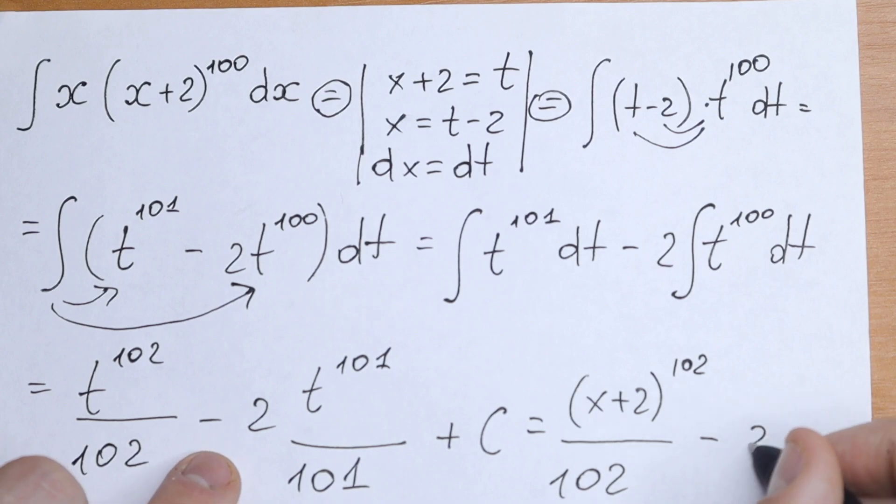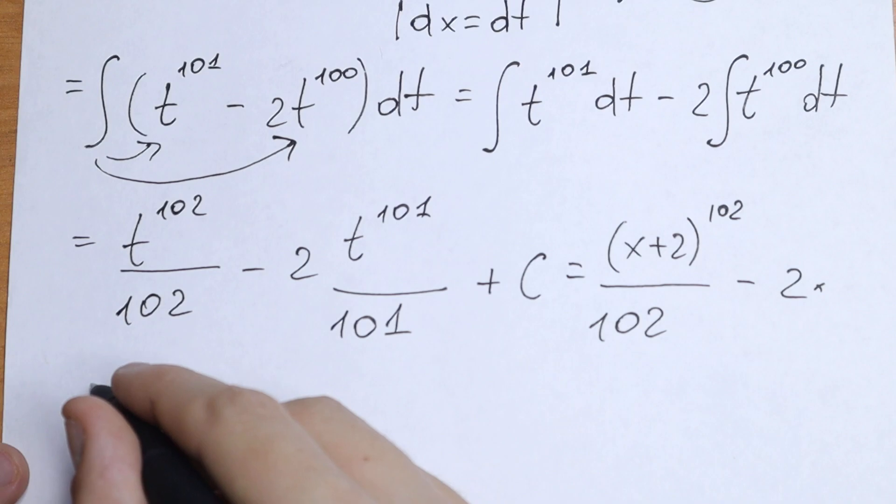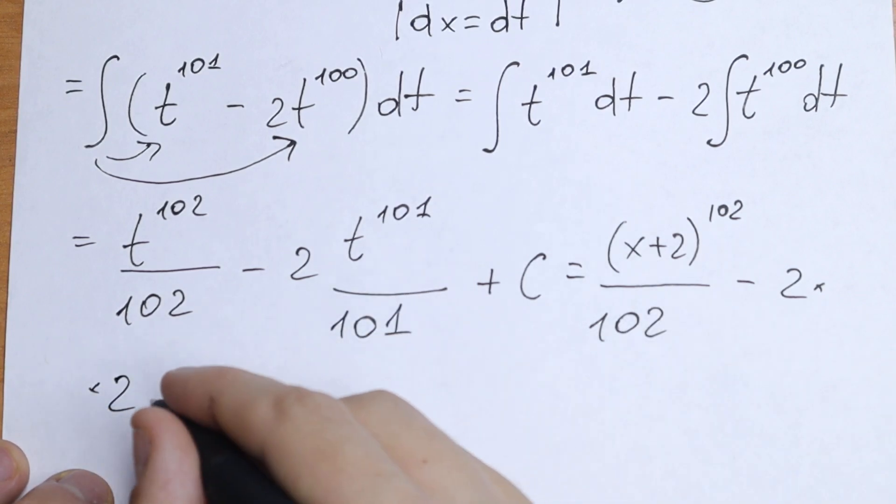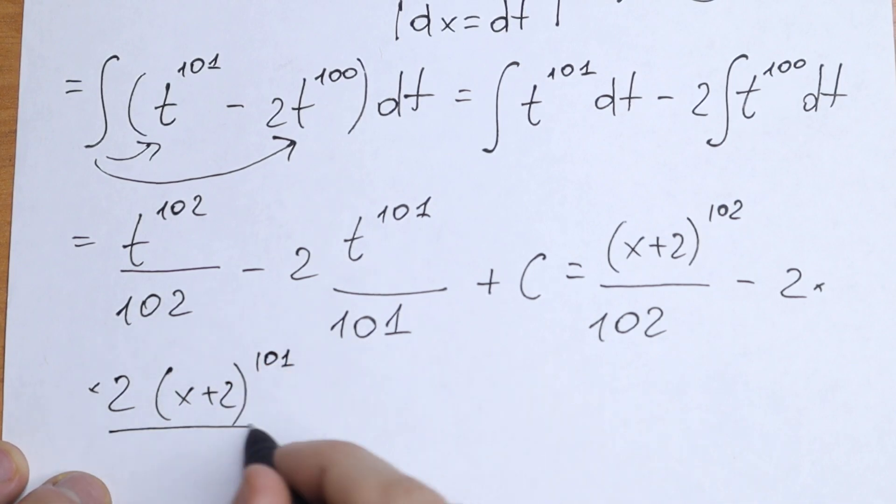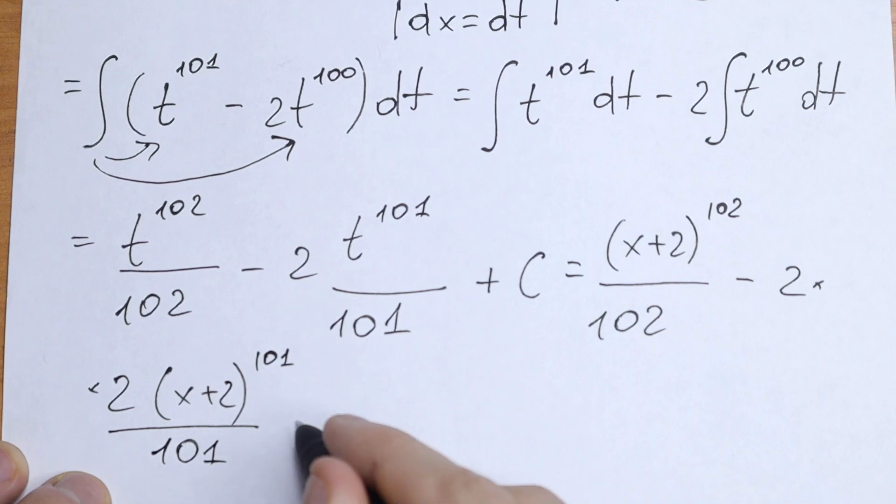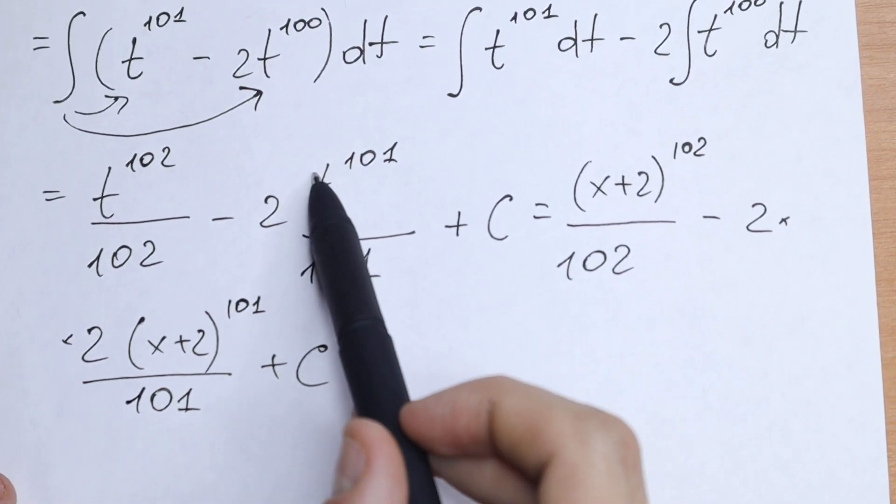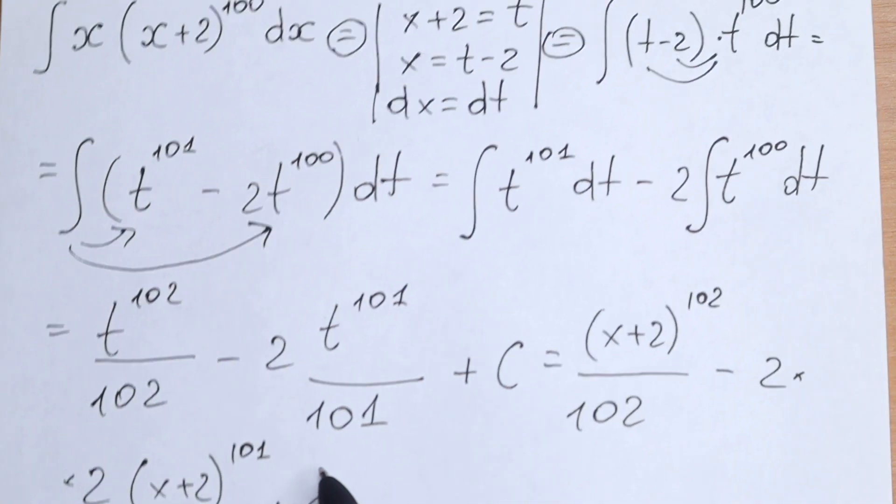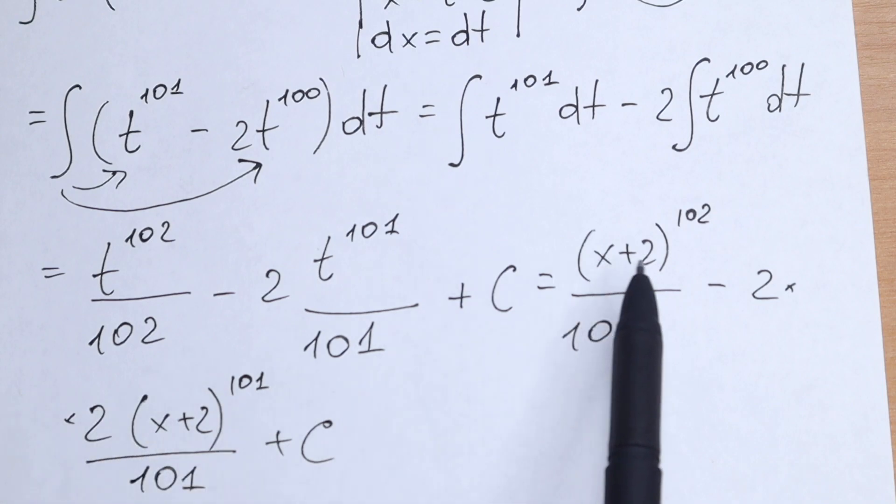As a result we will have x plus 2 to the power 102 divided by 102, and minus 2 times x plus 2 to the power 101 divided by 101, and plus c. So the last step we just change this t by x plus 2 because we had a substitution. So this is our answer.